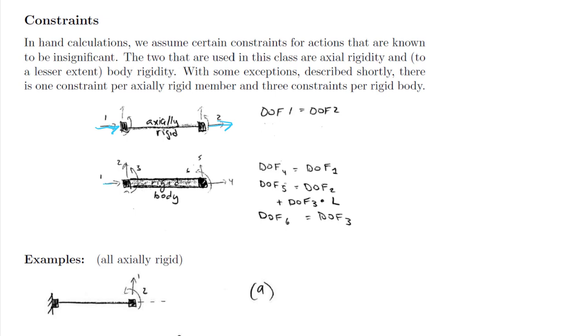If I move degree of freedom 1 to the right, that's going to determine degree of freedom 4. If I move degree of freedom 2 up, that's going to determine part of degree of freedom 5. If I rotate degree of freedom 3, I will rotate degree of freedom 6 and I will move degree of freedom 5. Therefore, by knowing degrees of freedom 1, 2, and 3, I know degrees of freedom 4, 5, and 6. So this reduces our number of degrees of freedom.